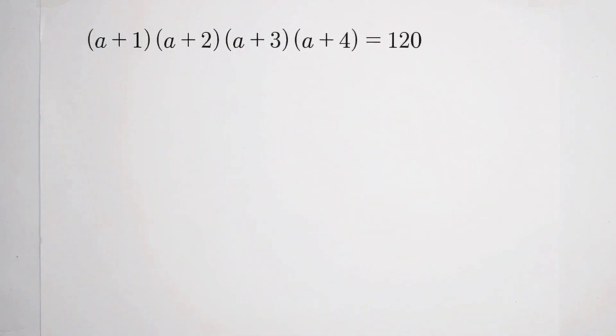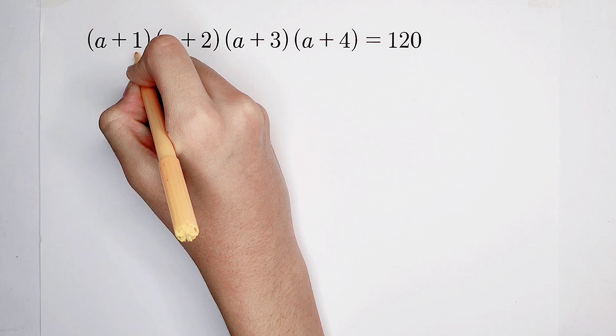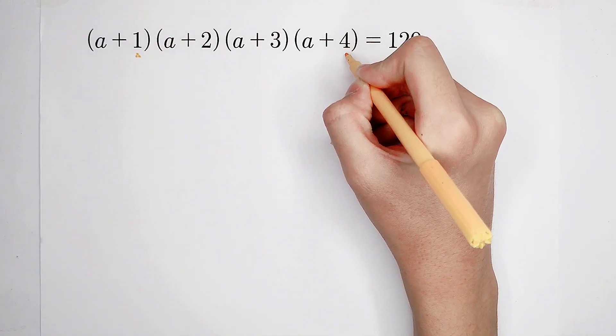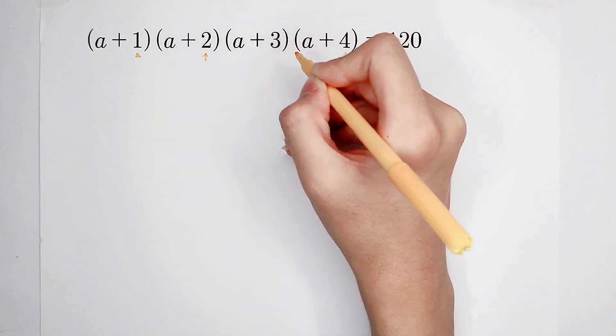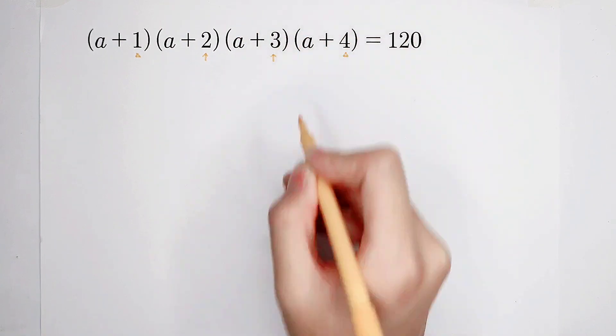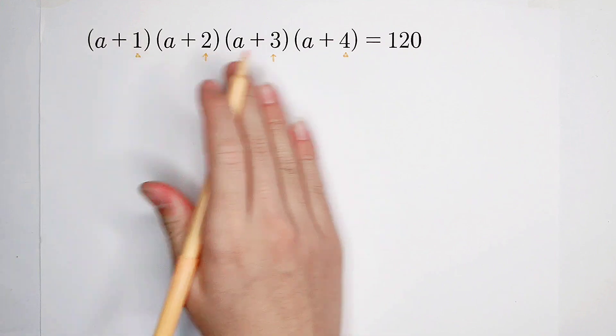Then, observe the constants and you can find out that 1 plus 4 is equal to 2 plus 3. 5 equals 5.